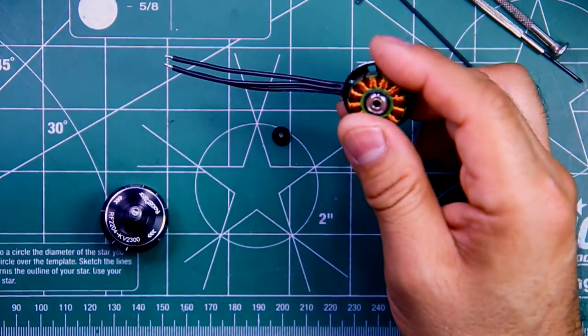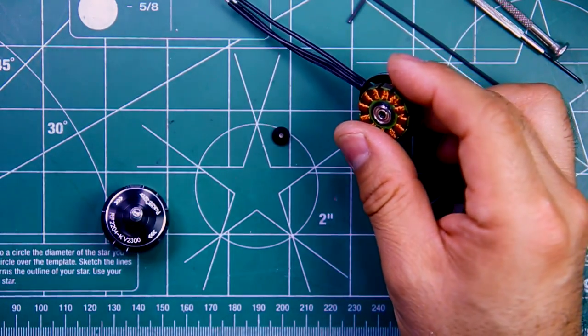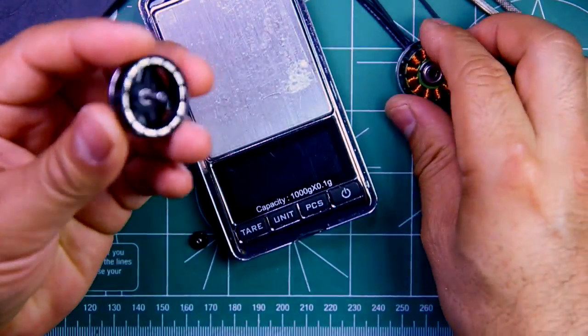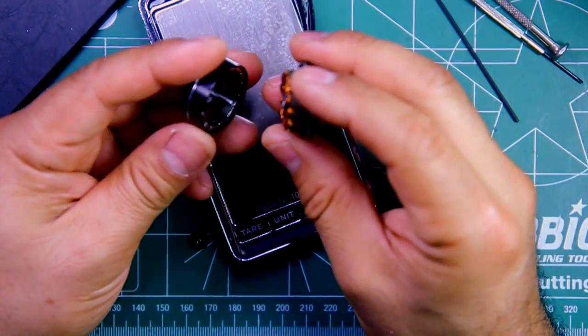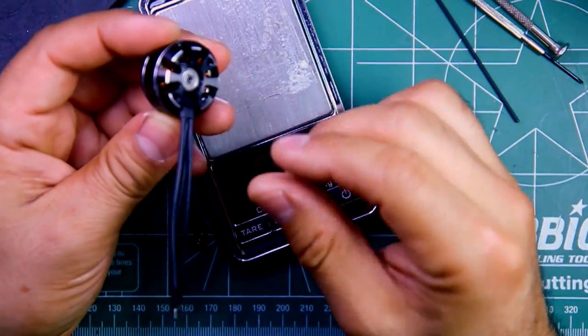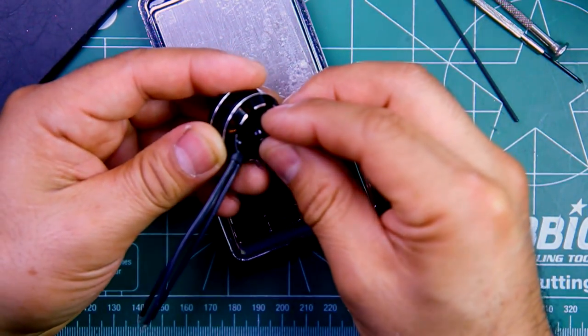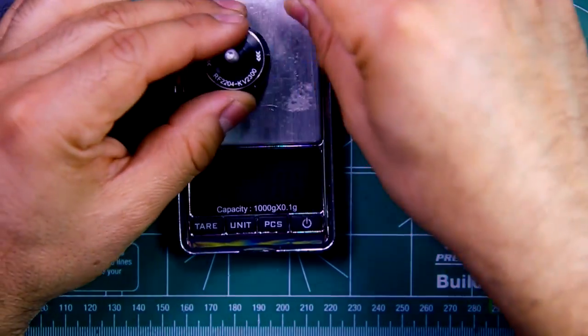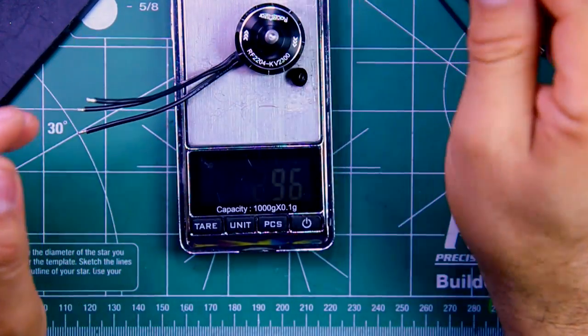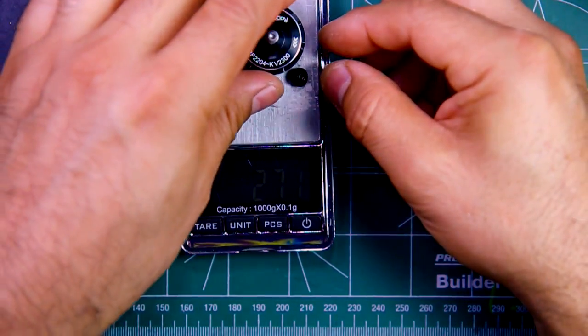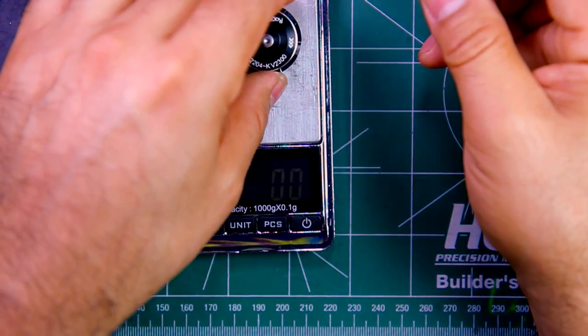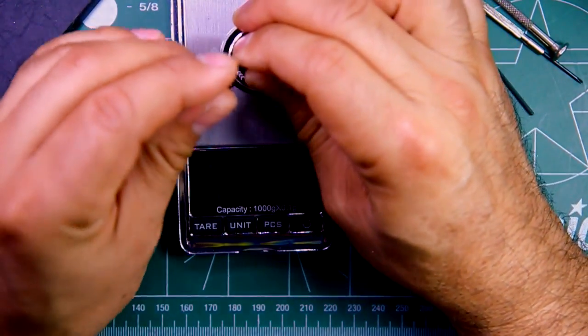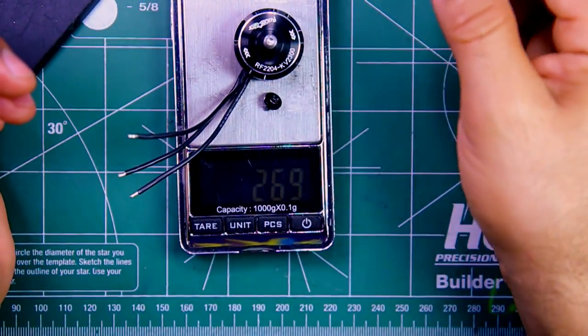One thing though, the motor is very well built. It's pretty solid. It feels like there's no play anywhere once you have it attached here. So let's see what it weighs. So it's 27.1 grams. Not the lightest 2204, but it is very solid. It feels very well made.